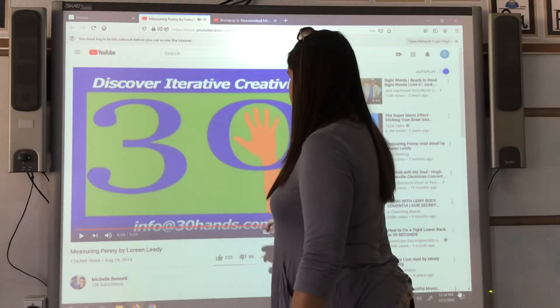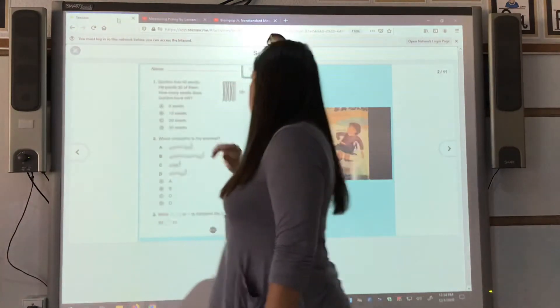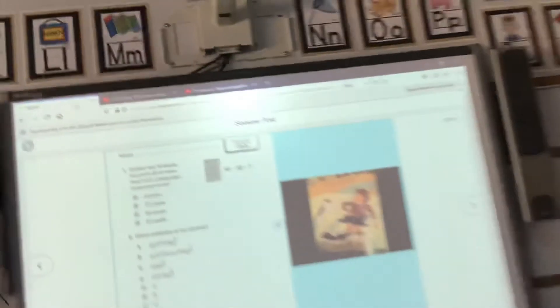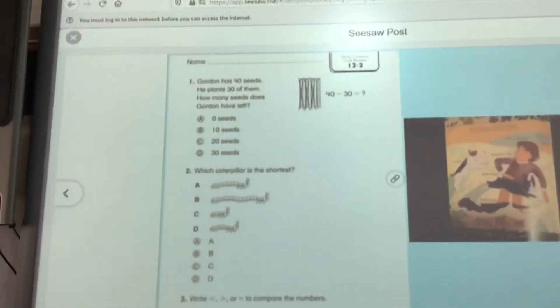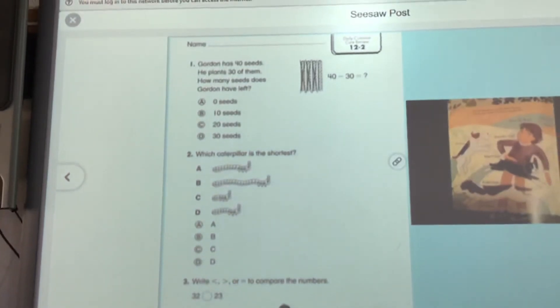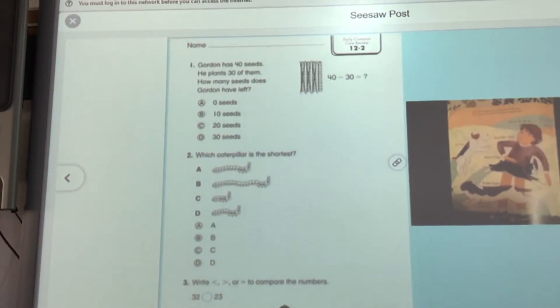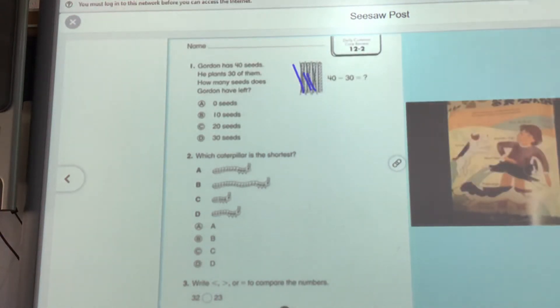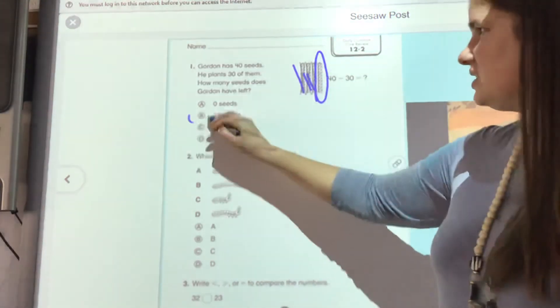She did a whole lot of measuring with her dog. That was awfully silly. So let's look at these review questions over here. So the first one says, oh, too close. Gordon has 40 seeds. He plants 30 of them. How many seeds does Gordon have left? So he crossed off three of them. So 40 minus 30. How many tens does he have left? He's got one ten. So he has 10 seeds left.